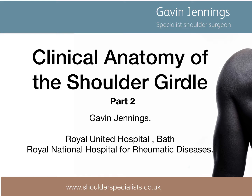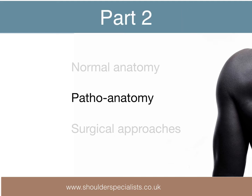My name's Gavin Jennings. I'm a surgeon specialising in shoulder problems. This is the second part of a presentation discussing the clinically relevant anatomy of the shoulder girdle. This part will discuss the pathoanatomy of the shoulder, firstly of the AC joint.